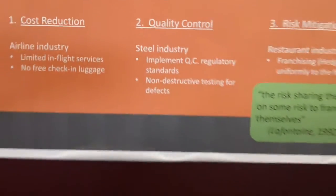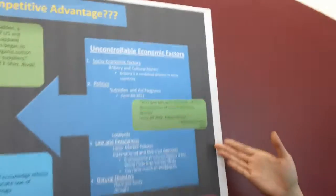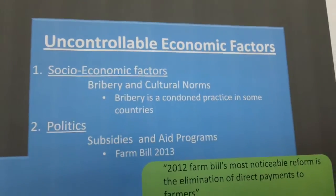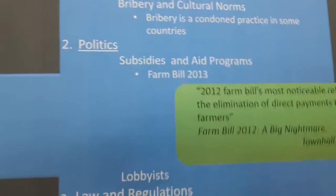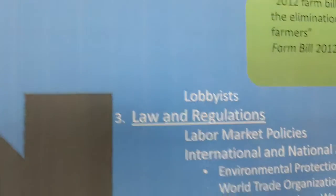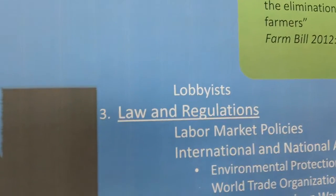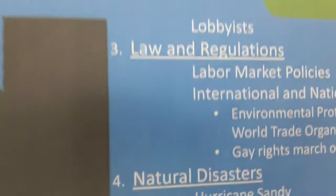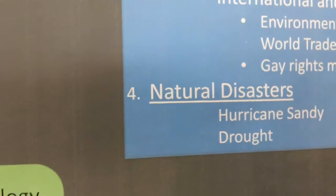One of the most important factors we also have to understand is that there are other factors in play that we cannot control. We call these the uncontrollable economic factors. They are important because they have a significant economic effect, but you cannot control them. For example, social and economic factors, the politics of a country such as protectionism versus quotas, different laws and regulations, and most importantly, natural disasters that you cannot control.